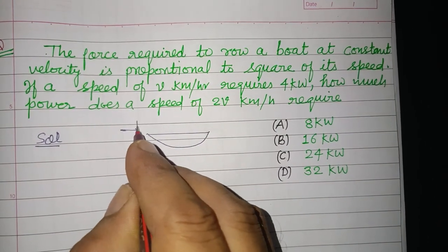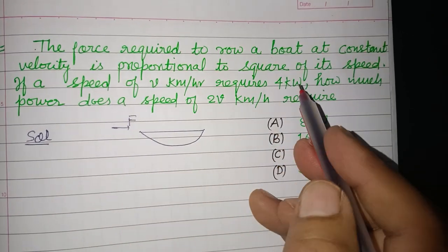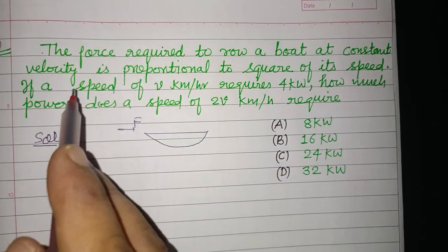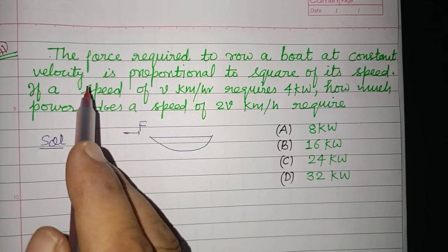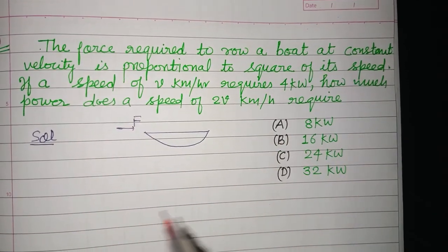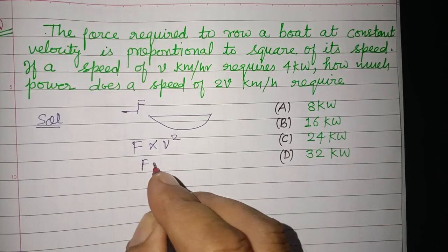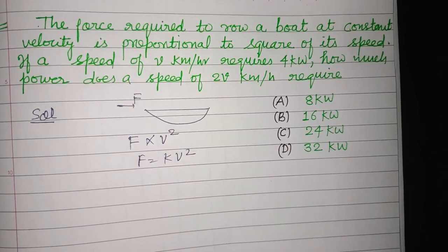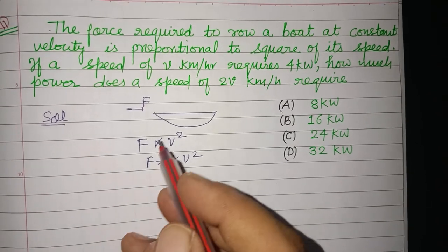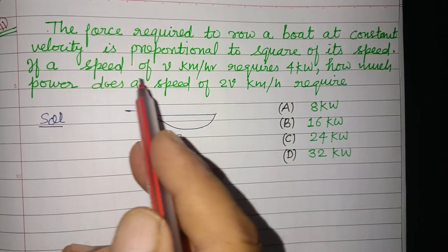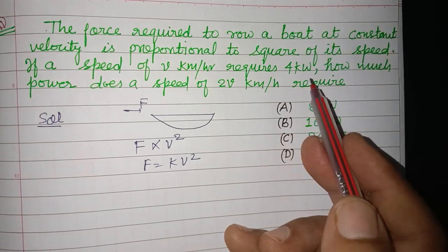So student, this is a boat on which force is acting. This force is directly proportional to the square of its speed, so F is proportional to V². F equals kV². If speed is V kilometers per hour, it requires 4 kilowatts power.